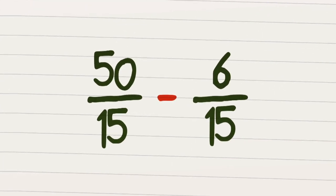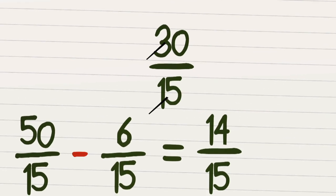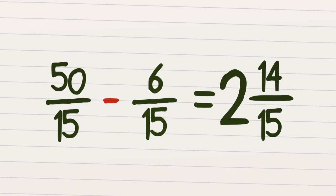Time to subtract because denominators match. So it's 50 minus 6, leaving 44 back. Now 30 fifteenths will cancel down to 2, leaving 14 fifteenths as a fraction too.